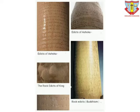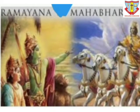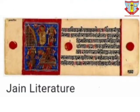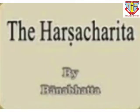The ancient Indian literature, including the epics Ramayana and Mahabharata, the Puranas, Jain and Buddhist texts, historical accounts of Indian authors, and travelogues by foreign travelers, are important sources of history. Writing of biographies of kings and dynastic histories marks an important step in Indian historiography.